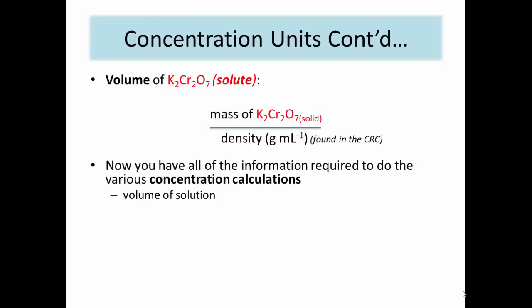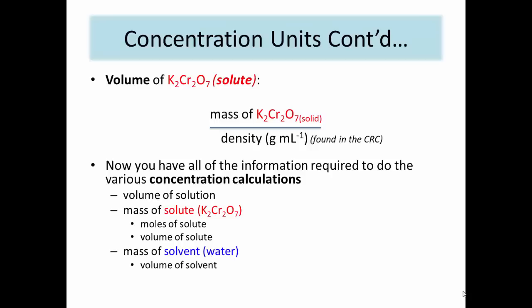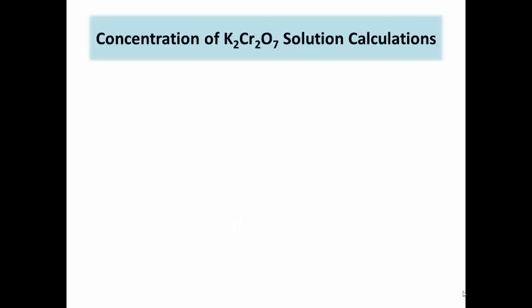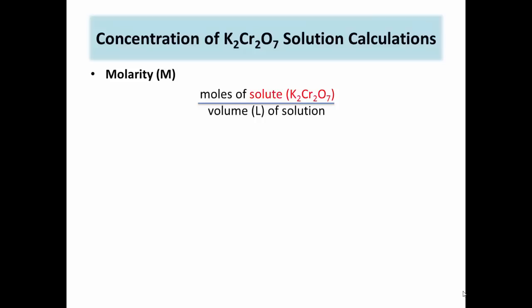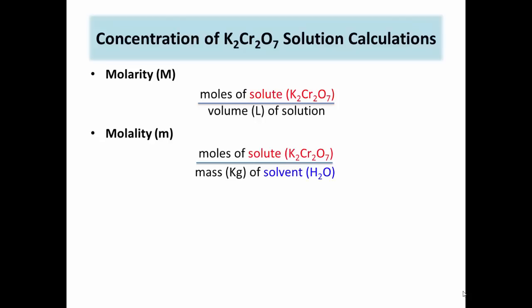We now have all the information required for Part A calculations. Molarity is the most widely used measure of concentration in chemistry — it is the moles of solute per liter of solution. Divide the calculated moles of potassium dichromate by the volume in liters of water. Molality is used in place of molarity when it is important for the concentration to be independent of temperature. To calculate, divide moles of potassium dichromate by the mass in kilograms of water.